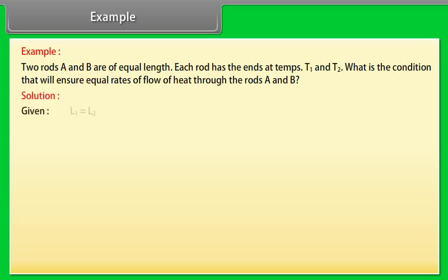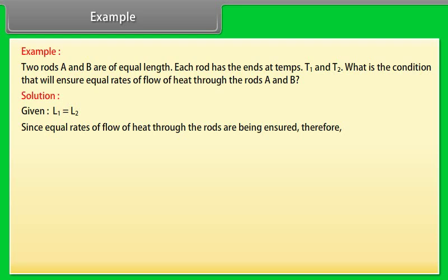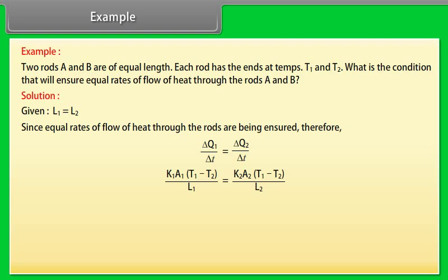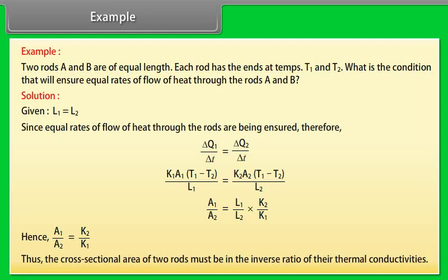Example: Given L1 = L2, since equal rates of flow of heat through the rods are being ensured, therefore ΔQ1/Δt = ΔQ2/Δt. On solving the expression, we get A1/A2 = (L1/L2)·(K2/K1). Hence, A1/A2 = K2/K1. Thus, the cross-sectional areas of two rods must be in the inverse ratio of their thermal conductivities.